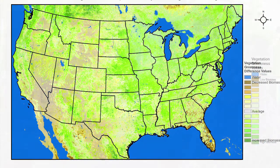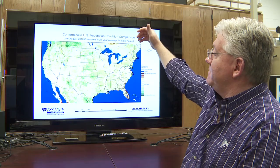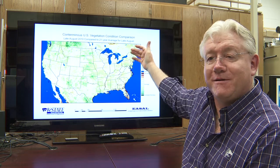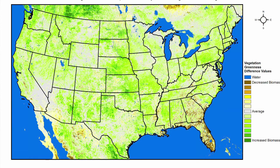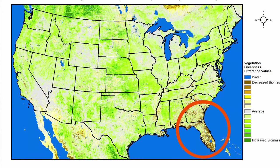So this map is late August compared to late August for the last 21 years, and what we're seeing here is that in parts of Kansas we are greener than we normally are at this time of year. In other parts we're not as green, and you can see areas that are drier due to heat stress or whatever might be causing it.